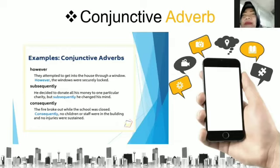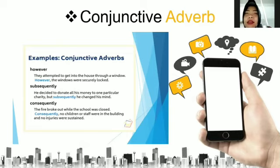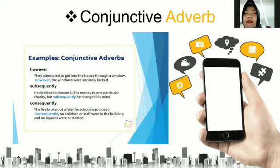For conjunctive adverbs — conjunctions used as adverbs — examples include: however, subsequently, consequently. For example: 'They attempted to get into the house through a window; however, the window was securely locked.' 'He decided to donate all his money to one particular charity, but subsequently he changed his mind.' 'The fire broke out while the school was closed; consequently, no children or staff were in the building and no injuries were sustained.'